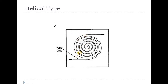The pressure on the surface changes the length, which changes resistance — the working principle is R equals rho L by A: resistivity, length, and area of cross-section. We covered bonded and unbonded types, and the four wire arrangement types. Thank you.